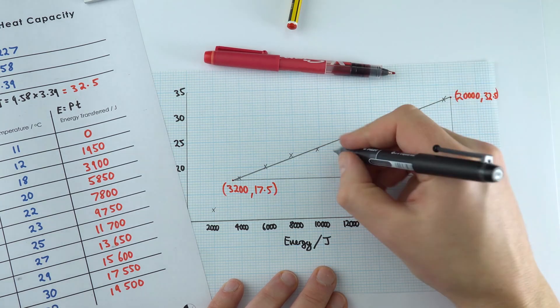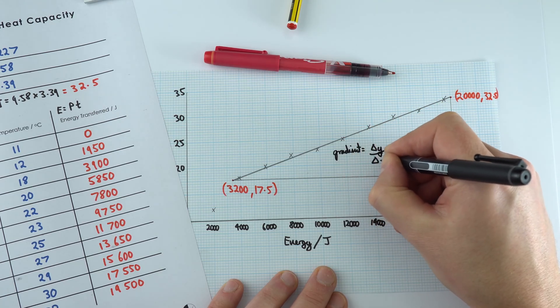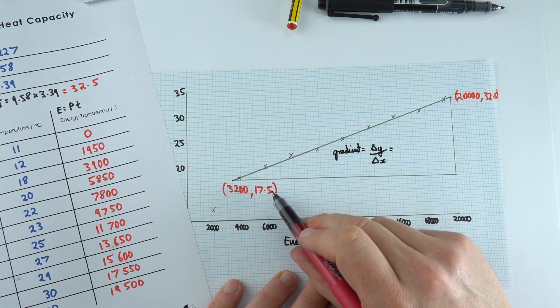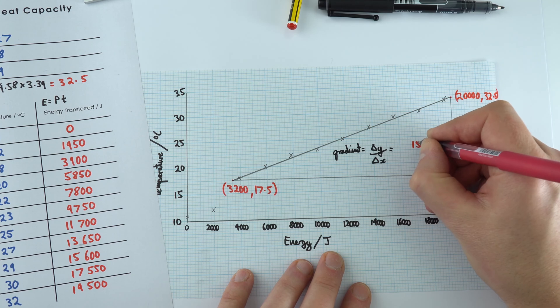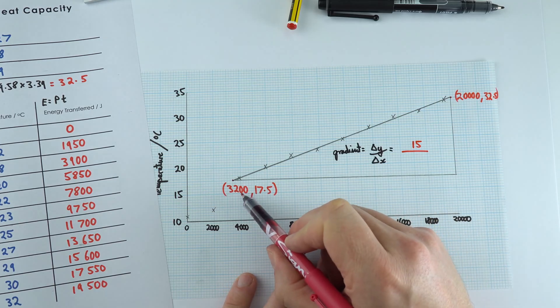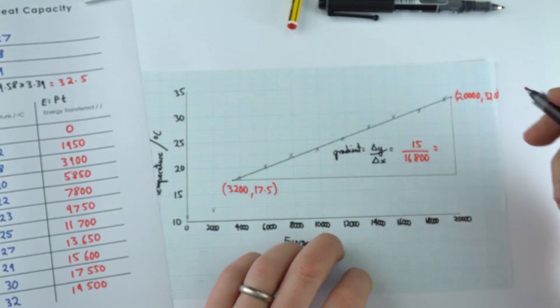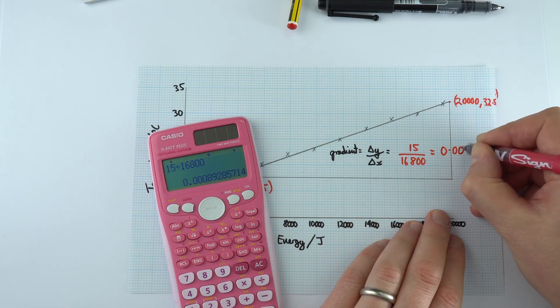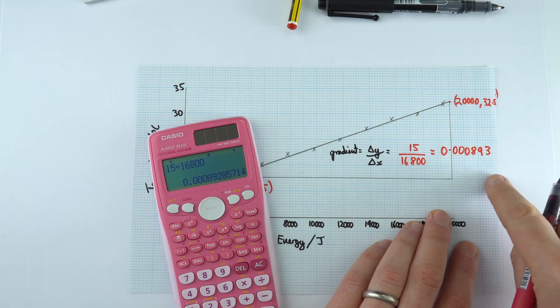So to work out the gradient, the gradient is going to be equal to the change in y divided by the change in x value. That's going to be 32.5 take away 17.5, which equals 15. We're going to divide this by the change in temperature, which goes from 20,000 down to 3,200, so that's 16,800. And when I work this out, this gives a value equal to 0.000893.